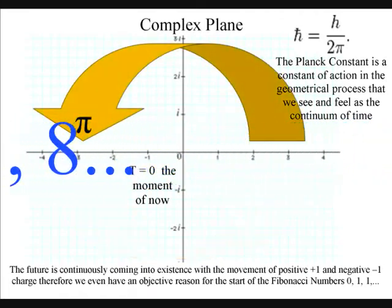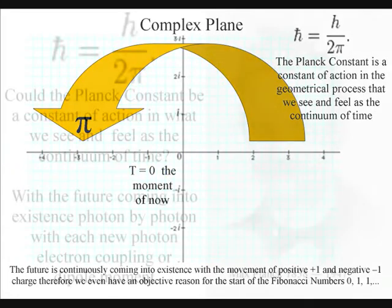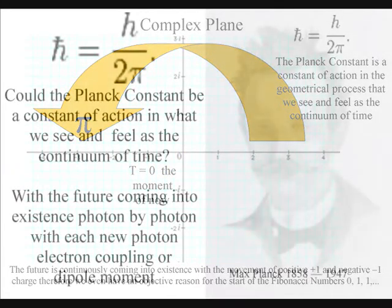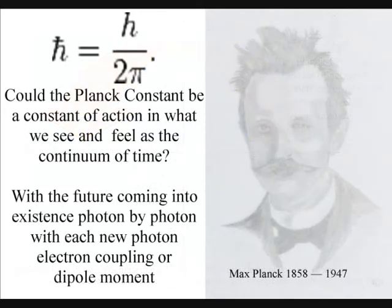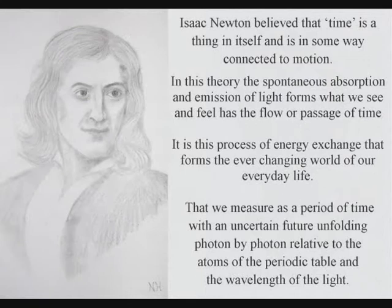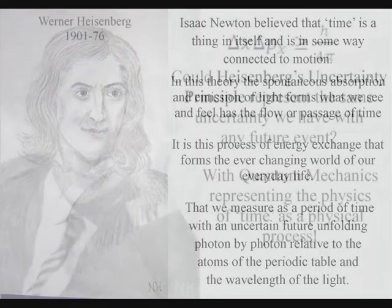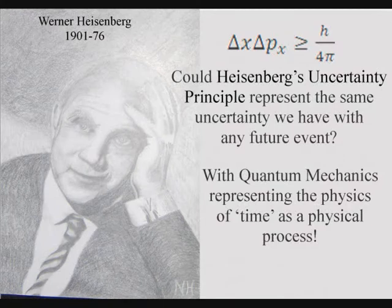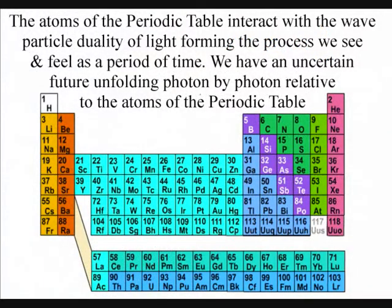In this theory, the mathematics of quantum mechanics represents the dynamic geometrical process that forms the passage of time, with classical physics representing processes over a period of time, as in Newton's differential equations. In such a theory, the universe is a continuum, with an uncertain future continuously unfolding relative to the atoms of the periodic table.